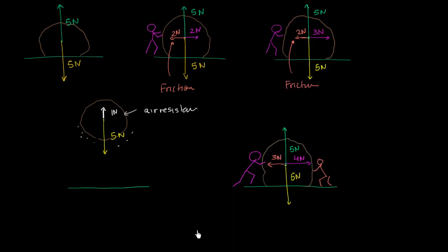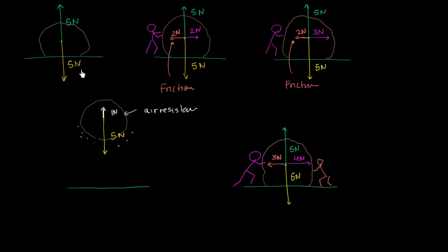Now let's think about which of these have an unbalanced force — or which have a net force. In the first scenario, the 5 Newton force of gravity and the 5 Newton normal force have the same magnitude in exact opposite directions, so they cancel out. These forces completely balance each other; there is zero net force. These forces are balanced.